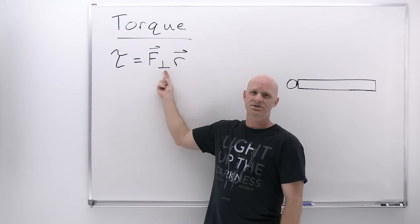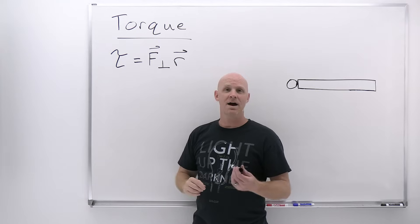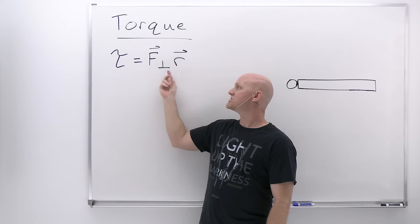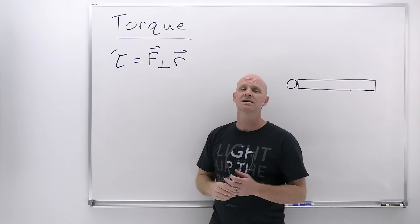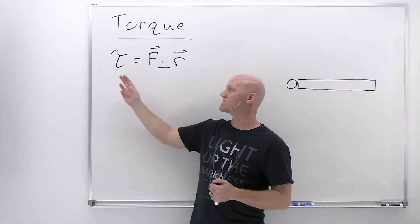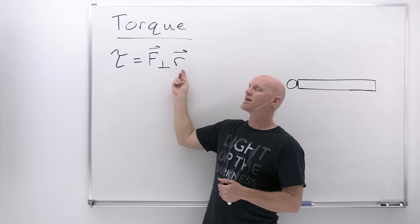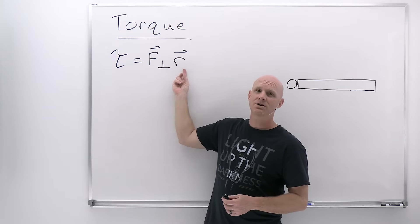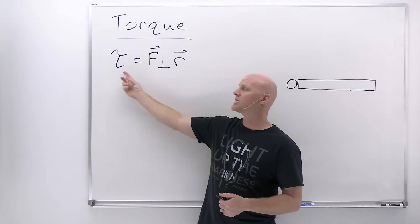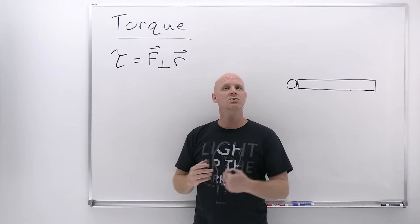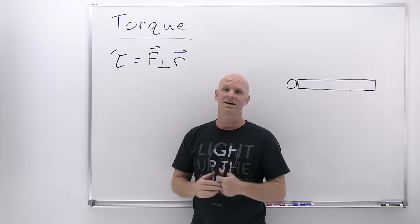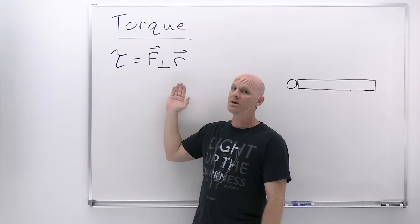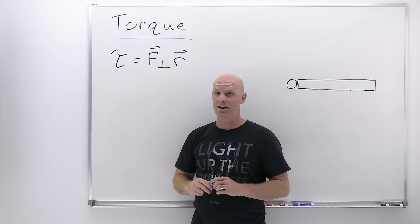Torque is at a maximum when that force is perpendicular. If it's not perpendicular, you're going to use the perpendicular component of the force. So torque equals the perpendicular component of a force times the lever arm distance. If you look at the units, force is newtons, lever arm is meters, and it's a newton meter for the SI unit for torque. We don't use joules for torque at all, just newton meter.